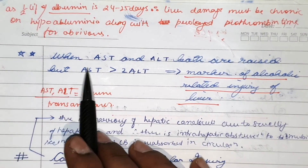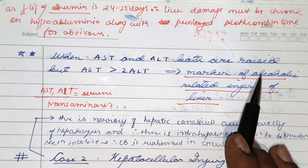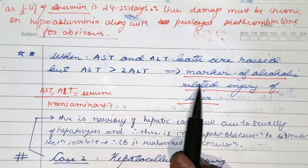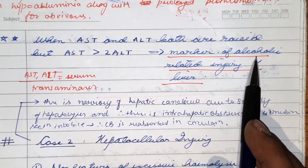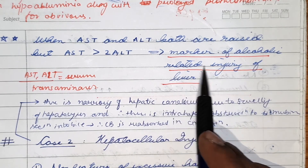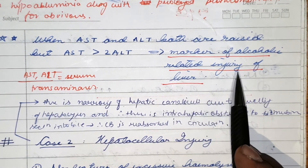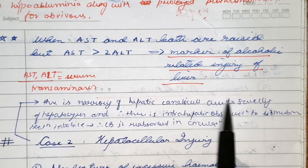When AST and ALT are both raised but AST is more than two times ALT, that is a marker for alcoholic-related injury to the liver.